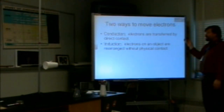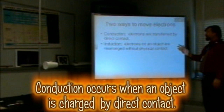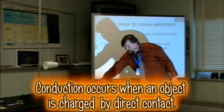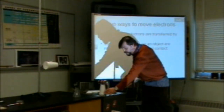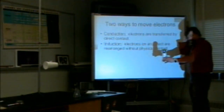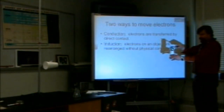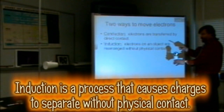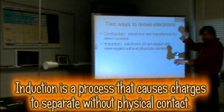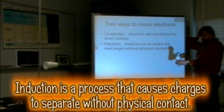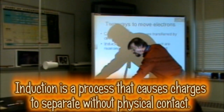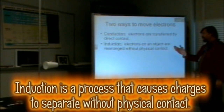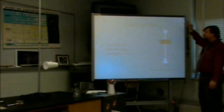Two ways to move electrons: conduction, when electrons are actually transferred by direct contact — so when I touch the can, electrons go from the rod onto the can by touching it. And induction, which is simply having the electrons close and having the object respond to those charges without physical contact — induction is when charges are rearranged without physical contact.